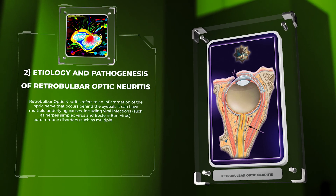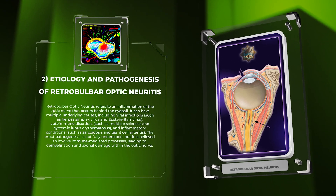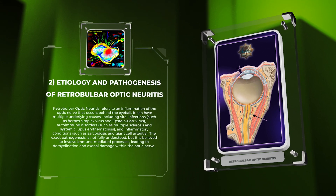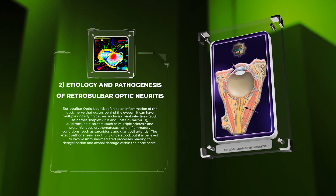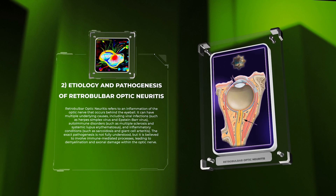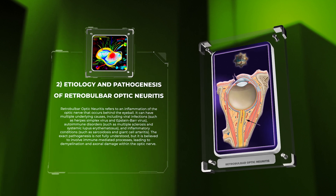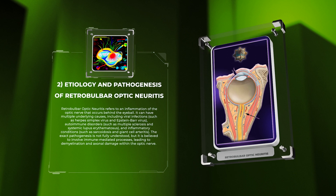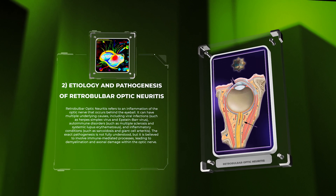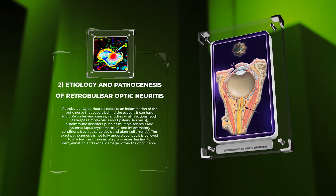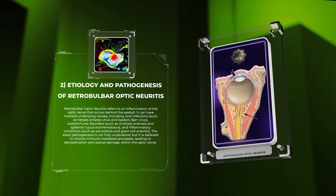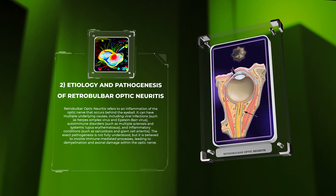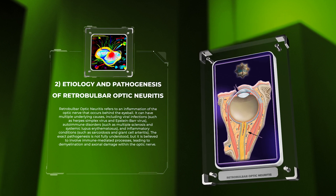Retrobulbar Optic Neuritis refers to an inflammation of the optic nerve that occurs behind the eyeball. It can have multiple underlying causes, including viral infections such as herpes simplex virus and Epstein-Barr virus, autoimmune disorders such as multiple sclerosis and systemic lupus erythematosus, and inflammatory conditions such as sarcoidosis and giant cell arteritis. The exact pathogenesis is not fully understood, but it is believed to involve immune-mediated processes, leading to demyelination and axonal damage within the optic nerve.